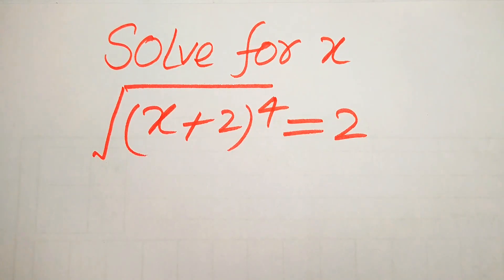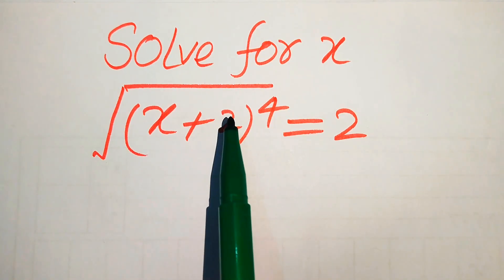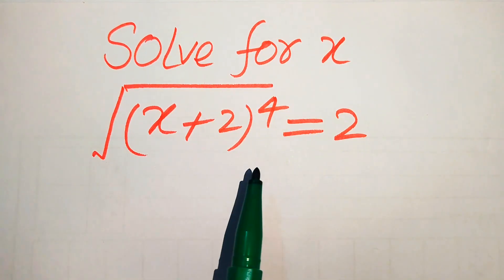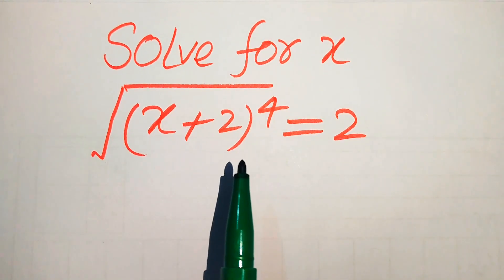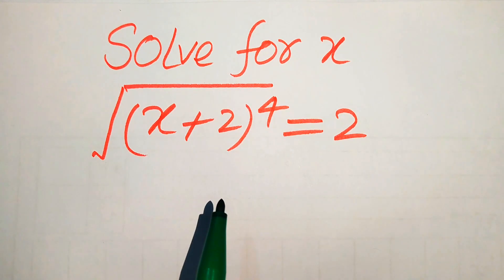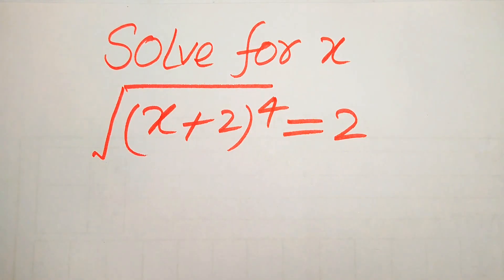Hello everyone. How to solve this problem for the values of x: if we have the square root of (x+2)^4 equals 2, and we solve this problem for the values of x. Here first we find all the roots of this equation, and at the end we will check which of the roots are solutions and which of the roots are extraneous roots of this equation.